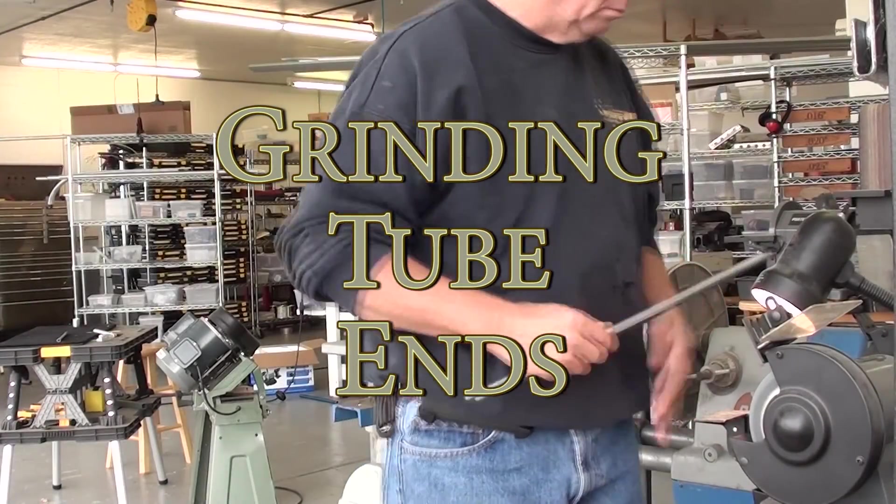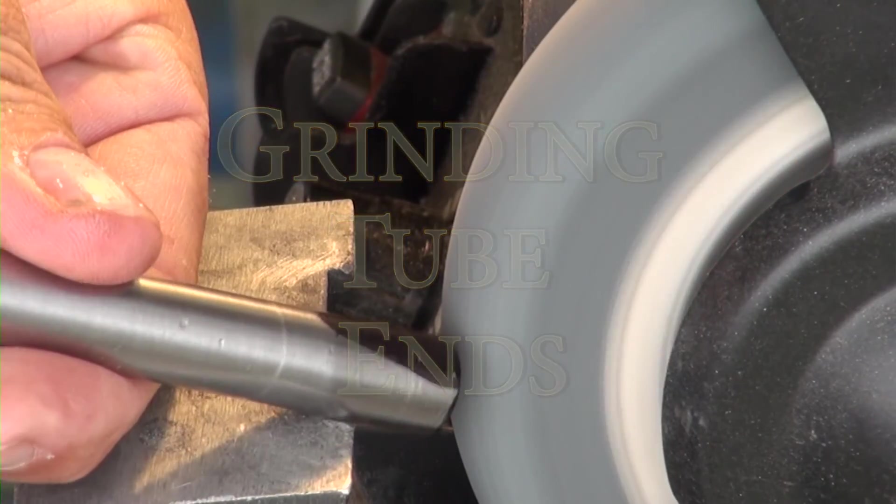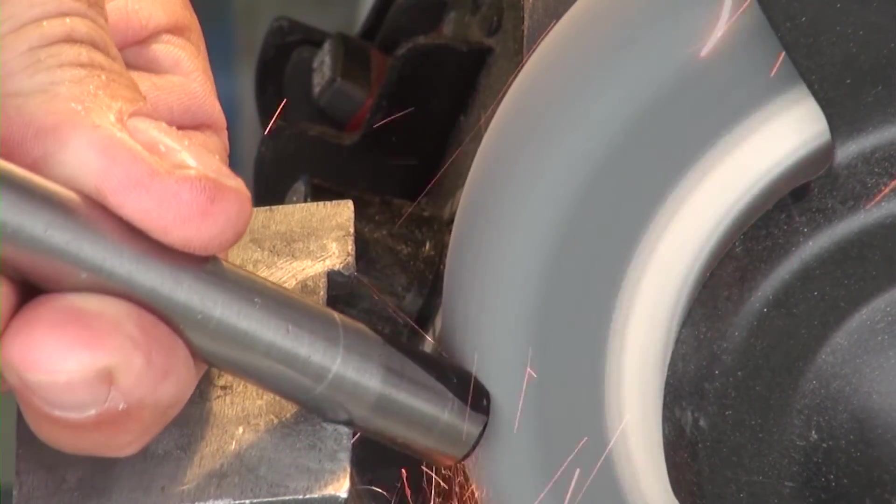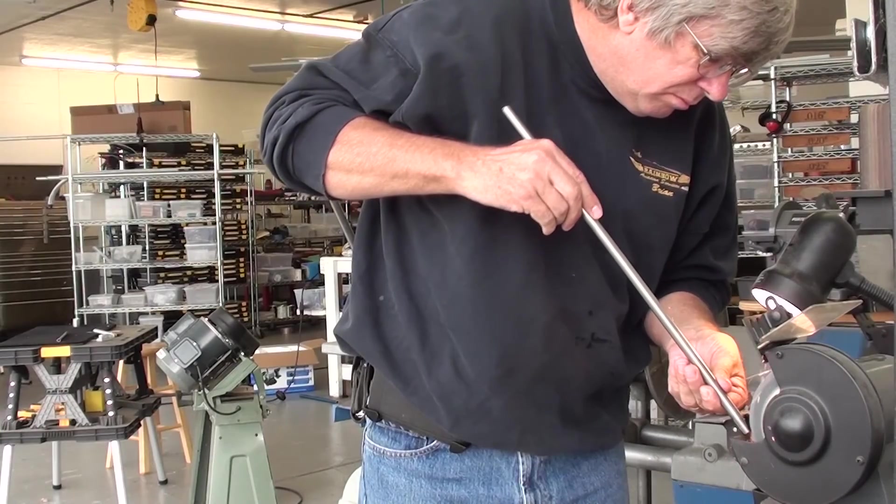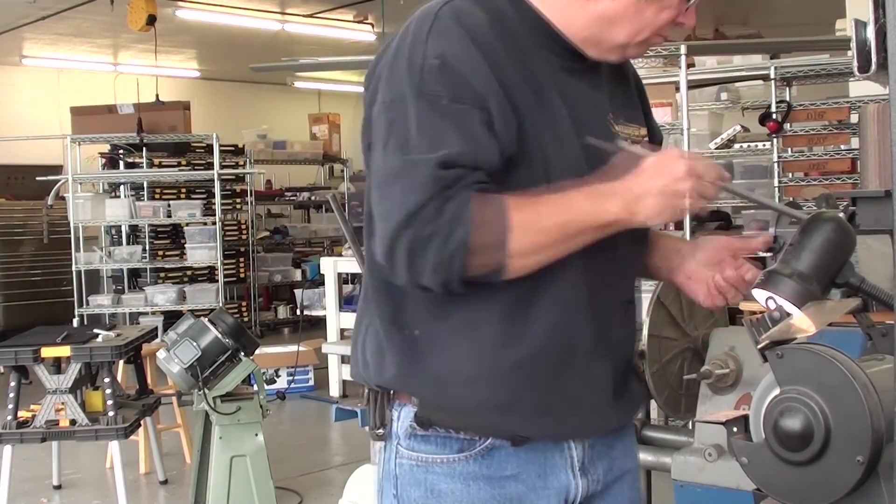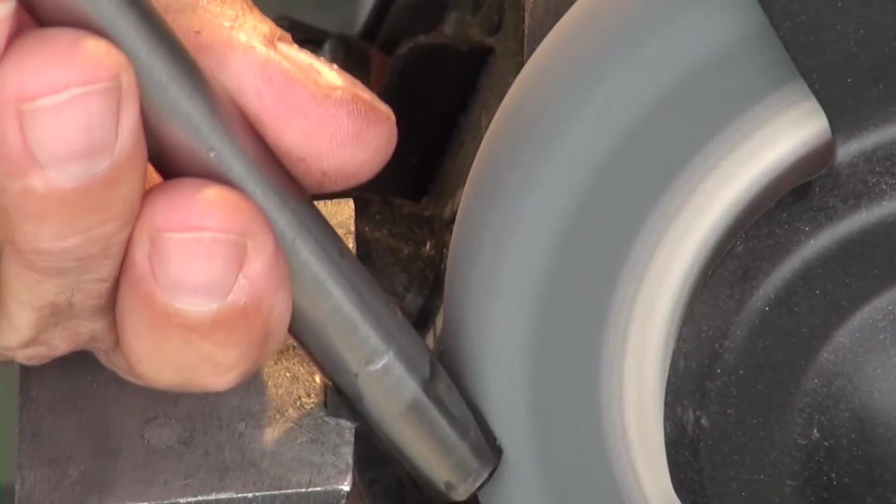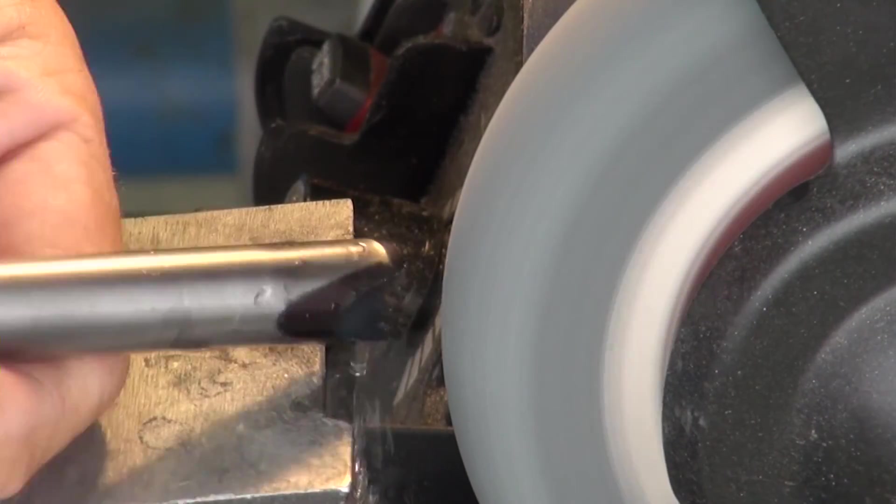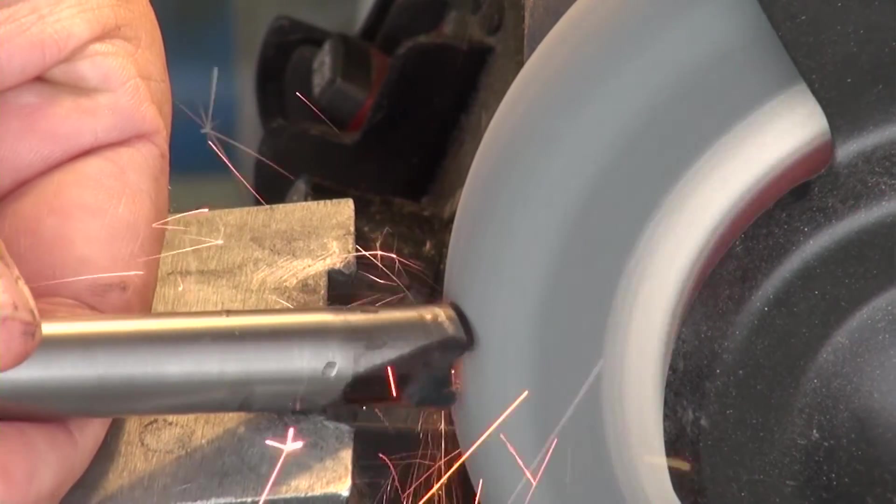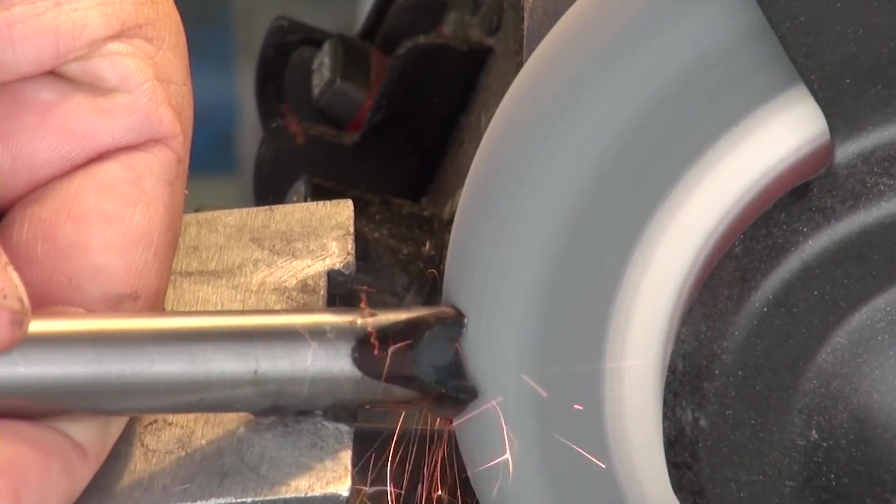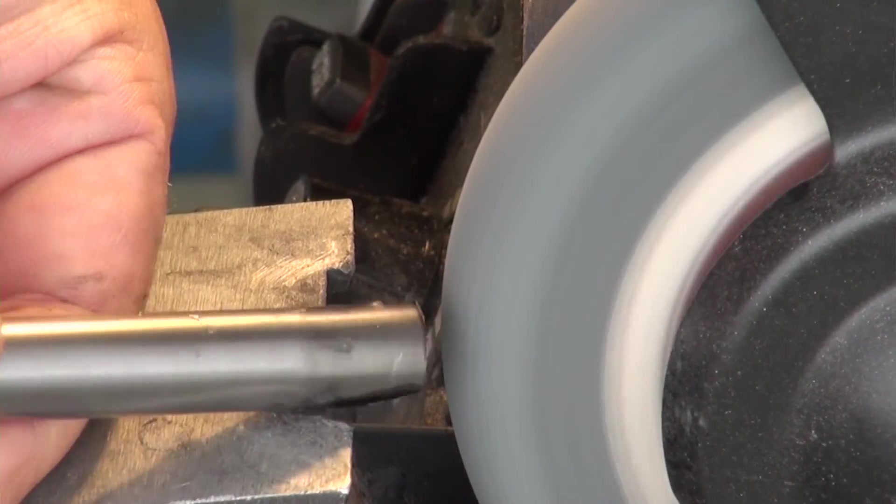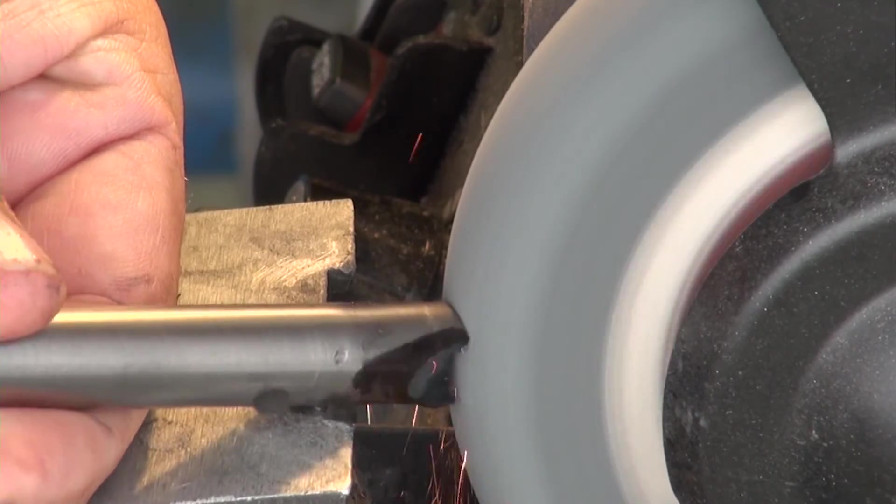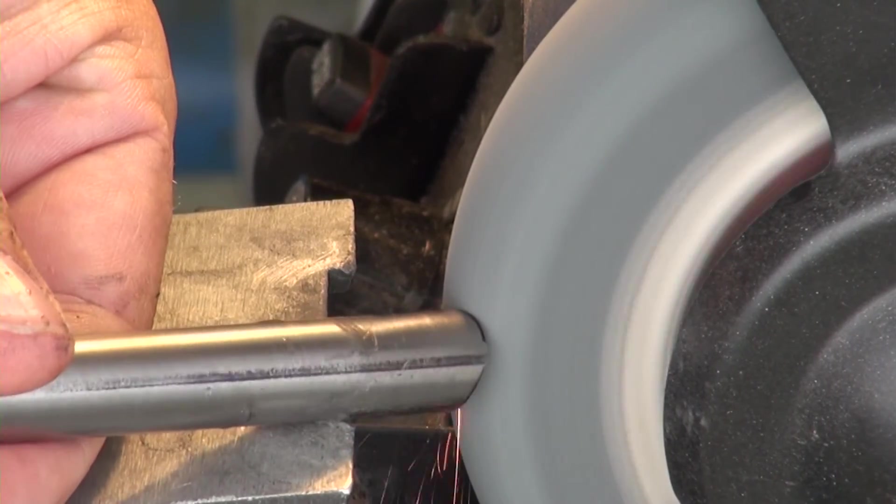So the next step here is to grind away the excess material on the end of the tube so that the tubes fit together correctly. In this case we're using a small porter cable grinder. Works really well. What we'll do is we'll simply grind away whatever excess material is there. We can do that a little bit at a time. And if you're working on a large surface like what we're doing here, you won't need to even cool the thing down.